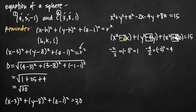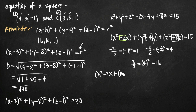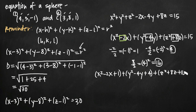For z, the coefficient is positive 8 — always take the sign on the coefficient. Divide 8 by 2 gives 4; squared gives 16. So we add 16 to the z group. Our equation becomes x squared minus 2x plus 1, plus y squared minus 4y plus 4, plus z squared plus 8z plus 16, equals 15 plus 1 plus 4 plus 16, which gives us 36 on the right-hand side.